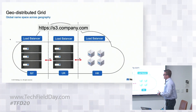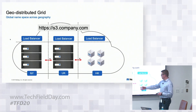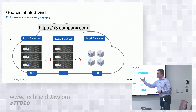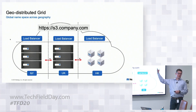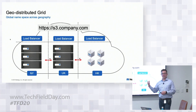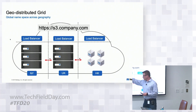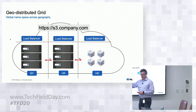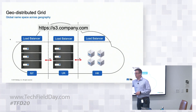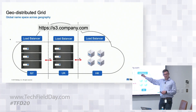Here's an idea of a geo-distributed grid. I've got multiple sites — New York, UK, and Hong Kong — and I'm creating a single S3 endpoint that I can then globally load balance. You could also create individual URLs, so I could create s3.ny.com or s3.uk.com if I wanted to let customers write into a specific site.